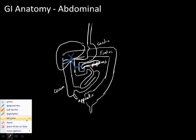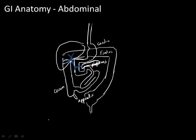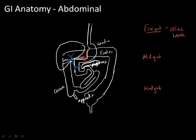Next, let's talk about arterial supply. The GI system is organized into three main sections: the foregut, the midgut, and the hindgut. The foregut is supplied by the celiac trunk. The celiac trunk immediately breaks off into three major parts: first, the left gastric artery; second, the splenic artery; and thirdly, the common hepatic artery.